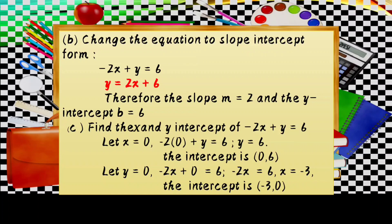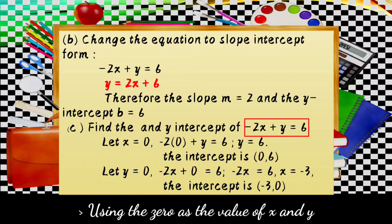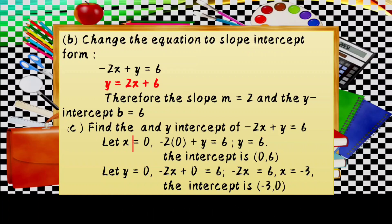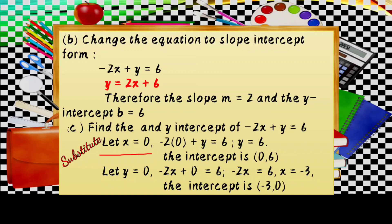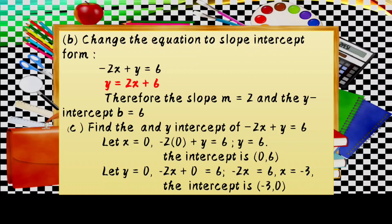For letter C, find the x and y-intercepts of negative 2x plus y equals 6 using 0 as the value of x and y. Let x equal 0: substitute — negative 2 times 0 plus y equals 6. Negative 2 times 0 is 0, so y equals 6. The y-intercept is the point (0, 6).